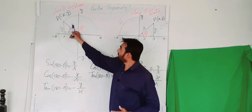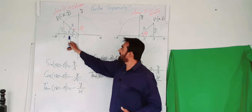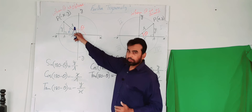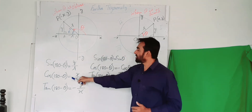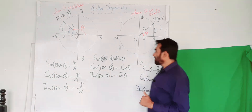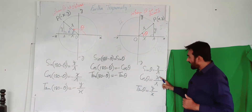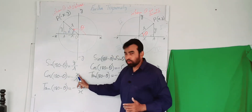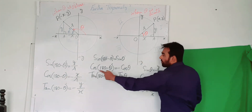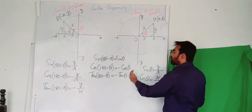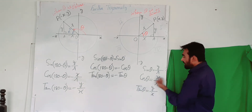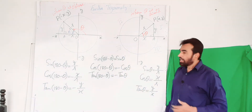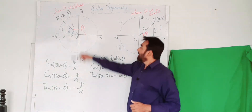Now for cos(180 - θ): this equals base/hypotenuse = minus x/r. The base is negative because it lies on the negative x-axis, so we get minus x over r. We know cos θ = x/r, but cos(180 - θ) = -x/r. By comparing these two, we conclude that cos(180 - θ) = -cos θ, since the negative sign distinguishes the two.